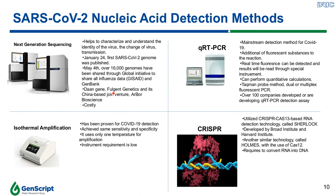The success in sequencing the viral genomes enabled researchers to develop PCR-based detection methods. Currently, there are a couple of companies that have already developed nucleic acid sequencing kits for production, such as Thermo, Fountain Genetics, and its China-based joint venture. However, the use of next-generation sequencing requires sophisticated bioinformatic tools, fast data processing, and large data storage, which can be costly and may hamper the widespread use of this technology for detection.